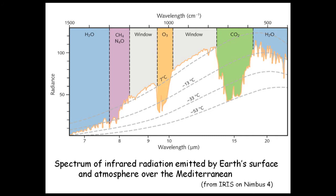Here is the big carbon dioxide band. The CO2 molecule vibrates strongly around 15 microns in the infrared. In the middle of the band, where the absorption is very strong, the radiation actually comes from very high in the atmosphere — in the stratosphere. And if you measure at that wavelength the amount of radiation, then you measure the temperature of the stratosphere.